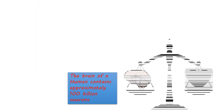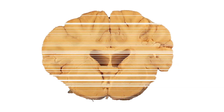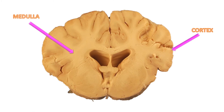The human brain contains approximately 100 billion neurons. The weight of the human brain is around 1.2 to 1.4 kilograms. Internally, the human brain is divided into two parts: the outer part is called the cortex and the inner part is called the medulla.